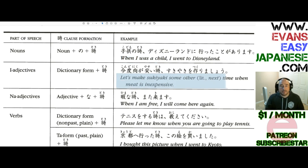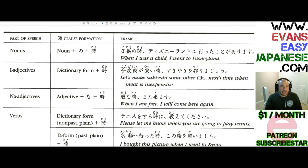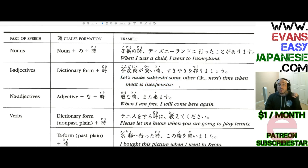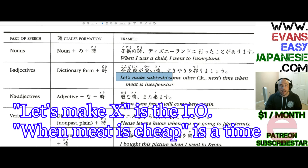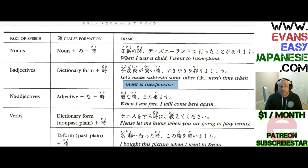'Let's make sukiyaki some other time when meat is inexpensive.' So which one of those two clauses is the big daddy — the main clause? 'Let's make sukiyaki' or 'meat is inexpensive'? They're both sentences by themselves, but what they're really trying to say is that they want to make sukiyaki — and they're modifying that with the condition of when meat is inexpensive. That's your dependent clause. Without 'let's make sukiyaki,' who cares about 'meat is inexpensive'?